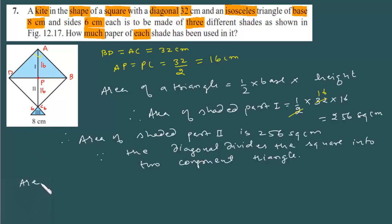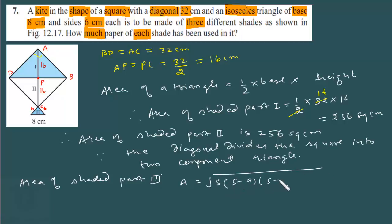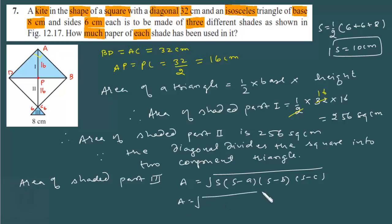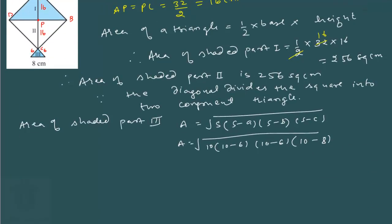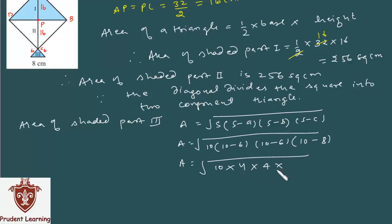Area of shaded part 3: since all three sides of the isosceles triangle are known, we use Heron's formula: A = √[s(s−a)(s−b)(s−c)], where s is the semi-perimeter. So s = ½ × (6 + 6 + 8) = ½ × 20 = 10 cm. This gives area = √[10 × (10−6) × (10−6) × (10−8)] = √[10 × 4 × 4 × 2].